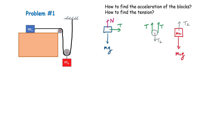Now if you let the system go, I'd guess acceleration A1 acts in this direction for block M1, and acceleration A2 acts in this direction for block M2. I'll call those my positive directions. Our next step is to write Newton's second law. For block M1 in the horizontal direction, there's simply one force, so we have T equals M1 times A1.